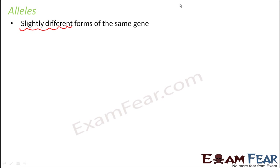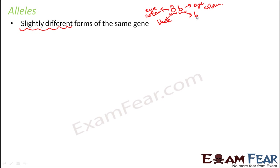For example, if we consider eye color, let us say capital B and small b are the two alleles — they together form the gene for eye color. Capital B depicts black eye color, whereas the small b allele depicts blue eye color. So even though they indicate the same type of gene, their forms might be slightly different. So alleles are slightly different forms of the same gene and they code for a pair of contrasting traits.